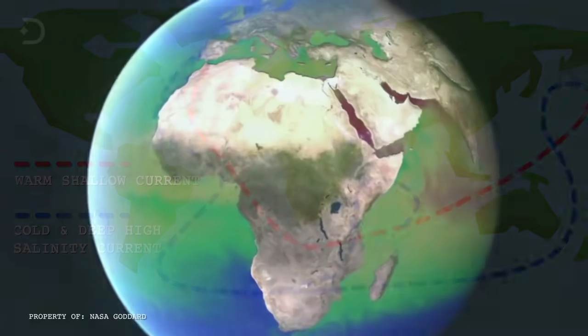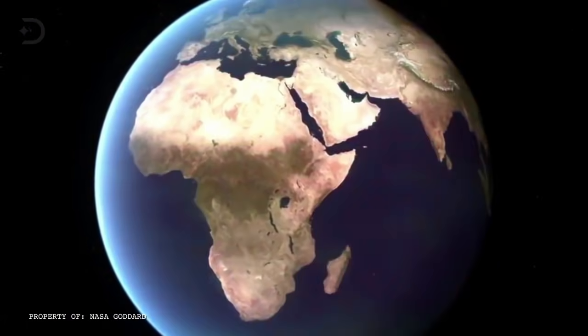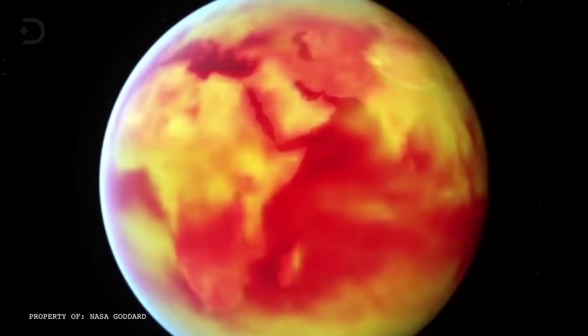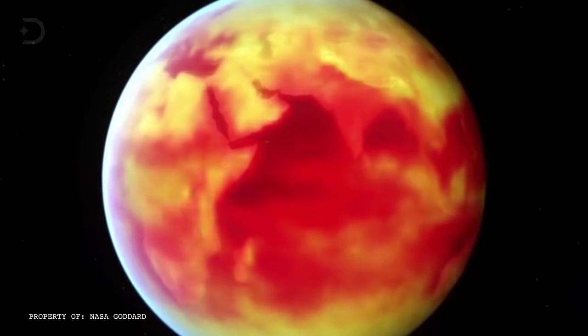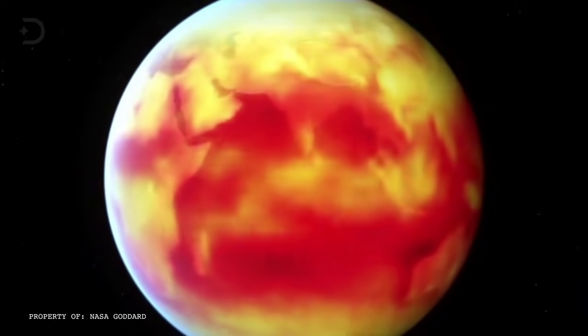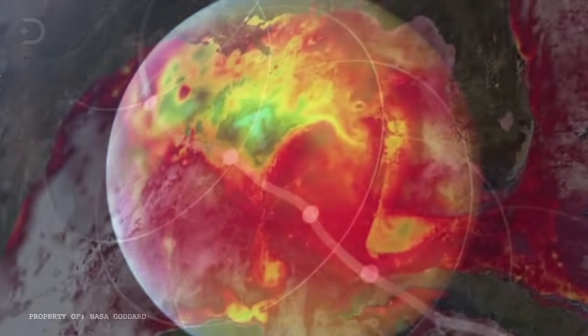Without getting too technical, warming up the poles would disrupt Earth's overall heat flow, throwing weather out of control. It's no surprise that global warming has boosted severe weather in general over the decades.